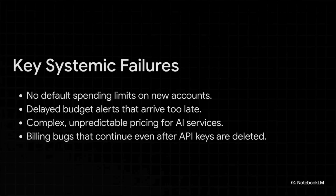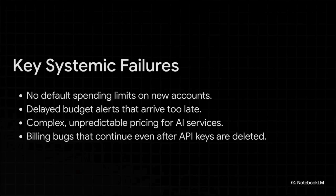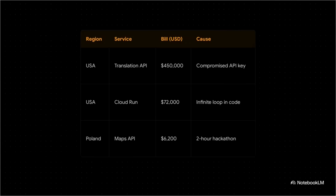This doesn't just happen by accident — it happens because of how these systems are designed. A lot of cloud platforms have no spending limits by default, meaning one tiny mistake in your code can literally lead to infinite costs. Budget alerts are often so delayed they show up after the damage is already done. On top of that, the pricing for new AI tools is so complex it's almost impossible for a normal person to figure out. There are documented cases all over the world: a $72,000 bill from a simple coding mistake that created an infinite loop, or a $6,200 bill from a little two-hour hackathon project. This is a global problem that keeps happening to developers.